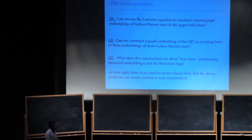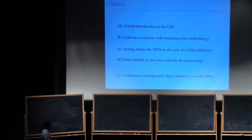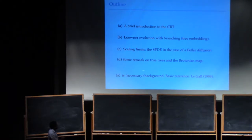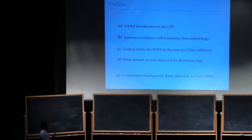There's a little bit of background I have to do because this is a diverse audience. There are several beautiful papers by Aldous which basically describe the CRT. I want to introduce you to the CRT and to the Löwner evolution. Then I'll tell you what our central result and central conjecture is — we find a new stochastic PDE that connects very nicely with random matrix theory.